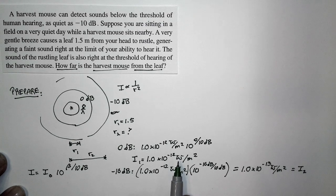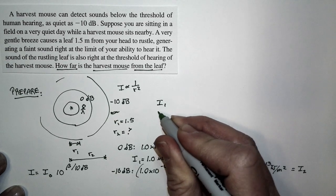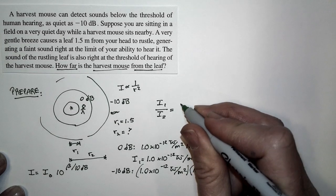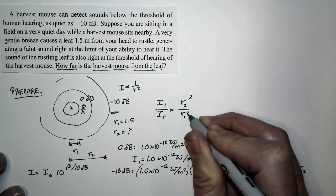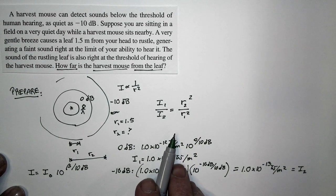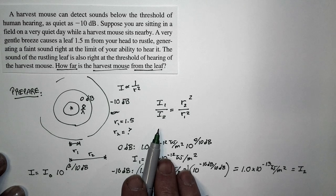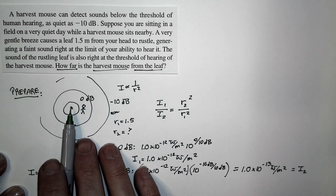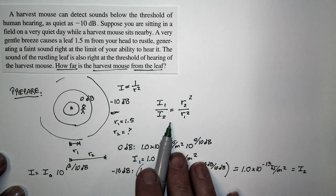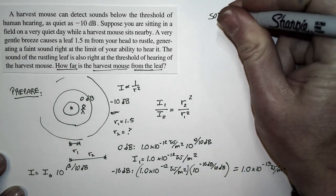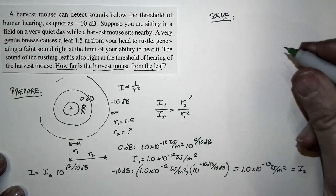Now, how does intensity change with distance? From Chapter 15, we have this relationship: the intensity at position 1 divided by the intensity at position 2 is proportional to the ratio of the squares of the distances — R2 squared over R1 squared. That means something at a greater distance will have lesser intensity, proportional to the square of the distance. So we don't actually have to compute the power the rustling leaf emits. We can just use this relationship. We know the two intensities, we know one distance, and we just have to find the second distance using ratio reasoning.